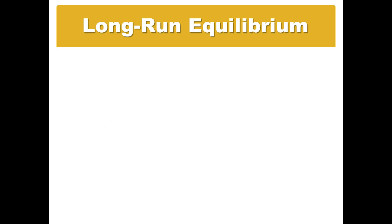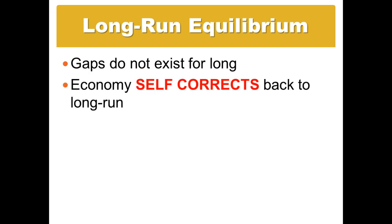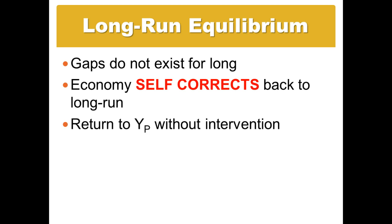The good news is that in general, the economy tends to find itself back in long-run equilibrium. We say the economy has gaps that don't last long because it is self-correcting. By the invisible hand, the economy will get itself out of a recessionary gap or an inflationary gap and back into long-run equilibrium at potential output. We don't need intervention by any external force. It may take time, it may be painful and messy, but the economy will always find itself back at potential output.